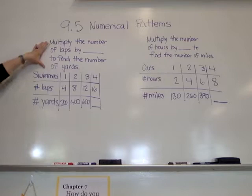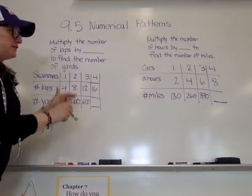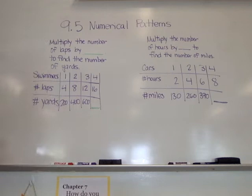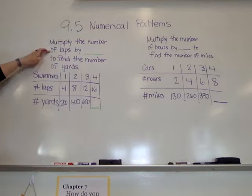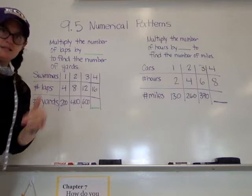We're starting by looking at the problem, and it's going to tell you exactly what you need to do with the numbers given. It's giving you a chart of numbers and you're filling in one bit of information to figure out the pattern. It says: multiply the number of laps by blank to find the number of yards. So we're talking about swimmers — how many laps they have to do to equal a certain distance.